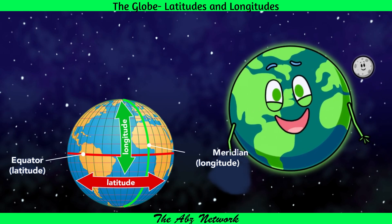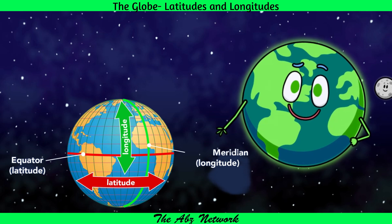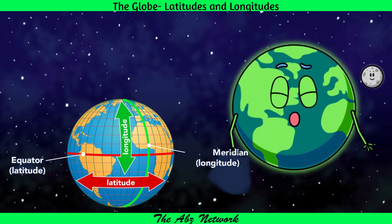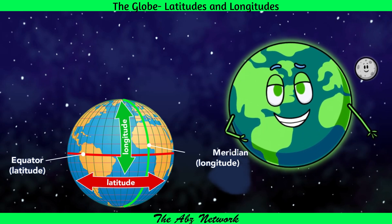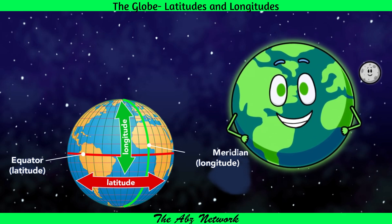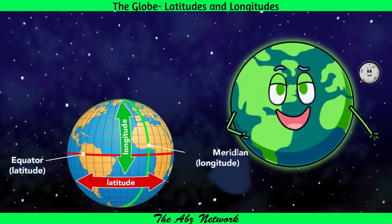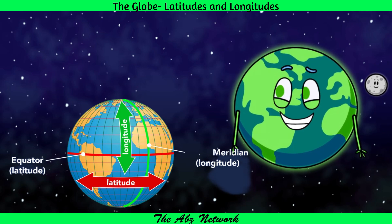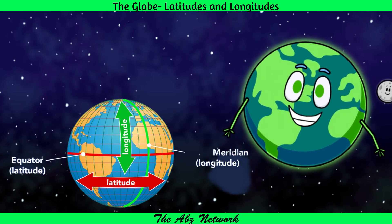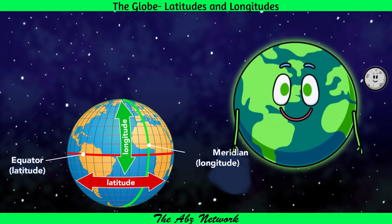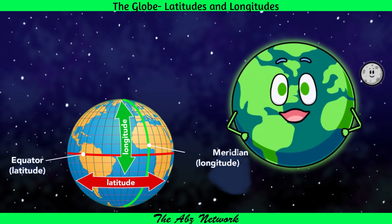These lines of latitude help in dividing the earth into three heat zones: the Torrid Zone, the Temperate Zone, and the Frigid Zone. The regions that receive vertical rays of the sun twice a year with the maximum amount of sunlight are called the Torrid Zone. There are two temperate zones — North Temperate and South Temperate — which receive slanting rays of the sun. The poles, which remain frozen throughout the year, are called the Frigid Zone.